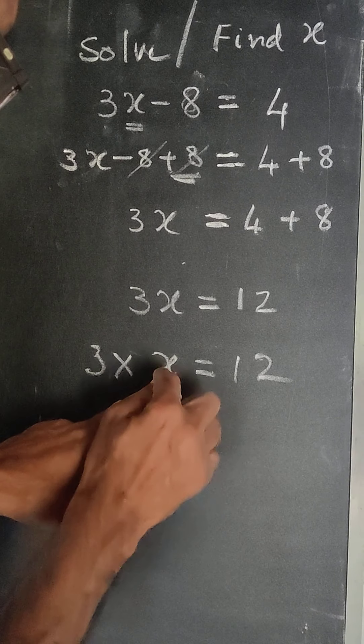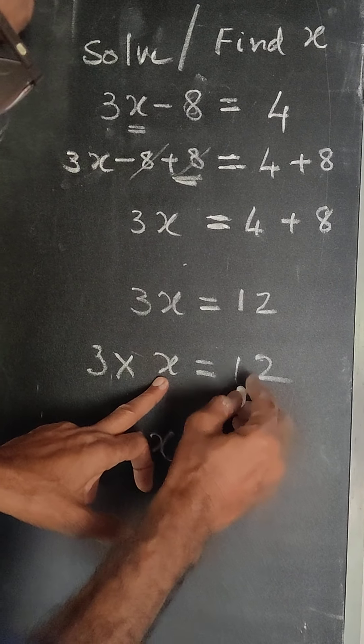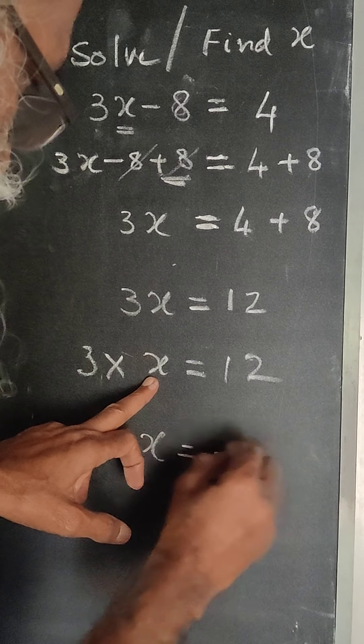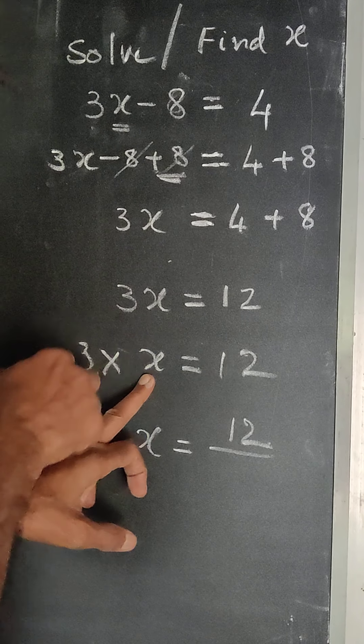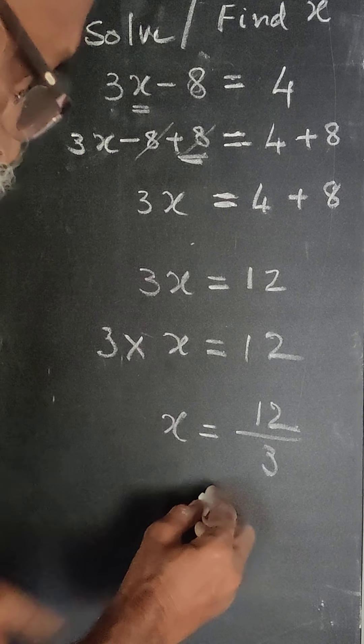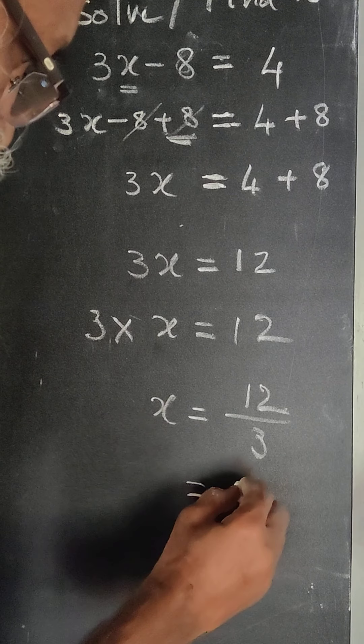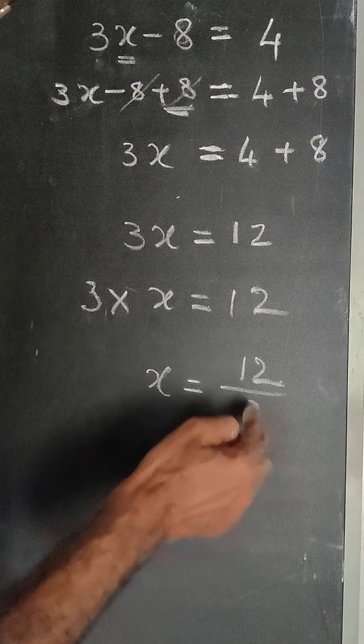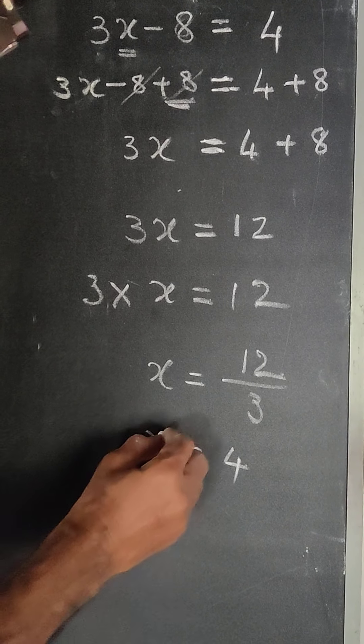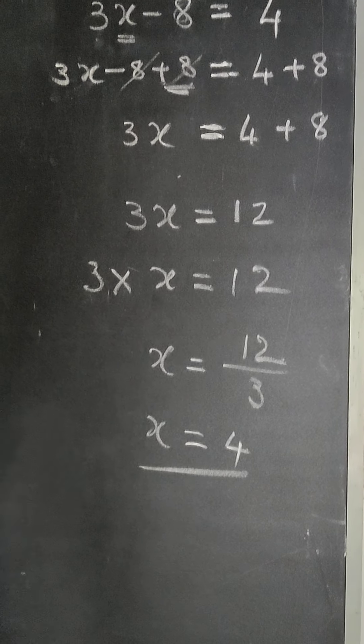What do we do if you want to get x? You have to take 12 and divide 12 with this number 3. So this is 4. 12 by 3 is 4. That is the answer.